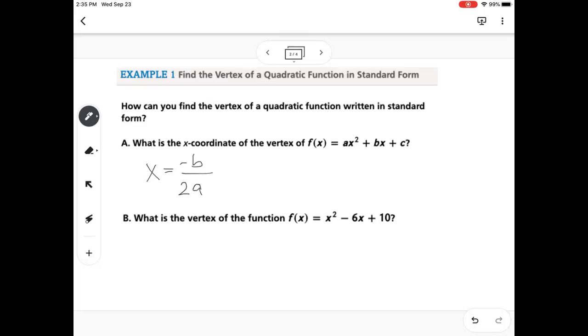And then to find the y-coordinate, you're going to plug the x value that you got into your equation and find the y value. So it's written as your x is negative b over 2a, and then your y is f of negative b over 2a.